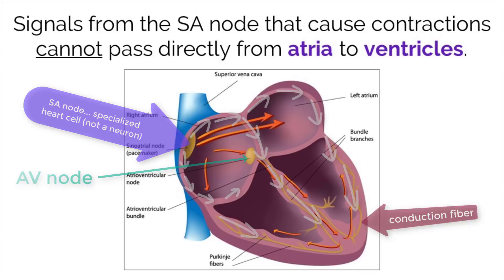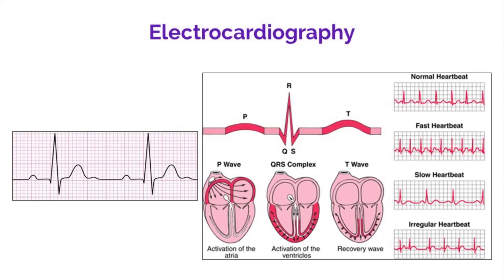Because heart cells use action potentials of their own to contract, scientists can measure the electricity of the heart using an electrocardiograph. A machine like this shows the different stages of the electricity in the heart while it is beating.